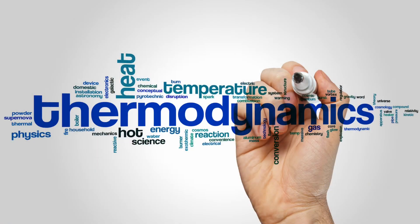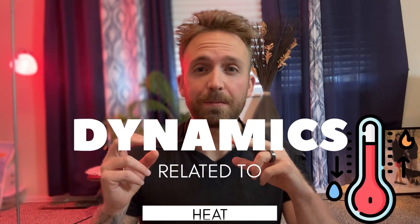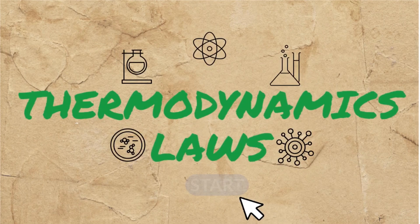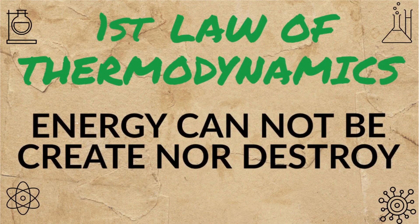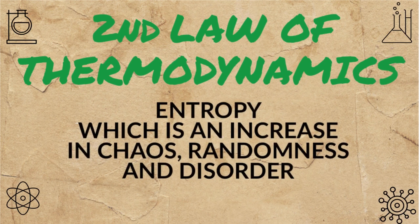Now let's move on to thermodynamics, or the dynamics related to heat. Don't worry, this is much easier than it sounds. Thermodynamics has two main laws. The first law is that energy cannot be created nor destroyed. And the second law, which is more important, is about entropy, which is an increase in the chaos, randomness, and disorder.